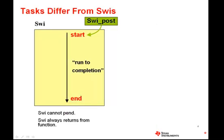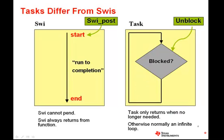Tasks differ from software interrupts in a very fundamental way. SWIs are threads that always run to completion. Although they can be preempted by higher priority SWIs and by hardware interrupts, they cannot block themselves while waiting for an event, and they must be implemented in a way that allows them to exit. Tasks, on the other hand, are often implemented as an infinite loop, only exiting when the application as a whole is shutting down or if the system resources are being changed in a fundamental way. When they need to wait for some kind of event to occur or resource to become available, they will block themselves using some kind of semaphore.